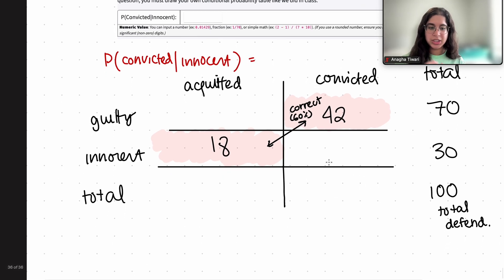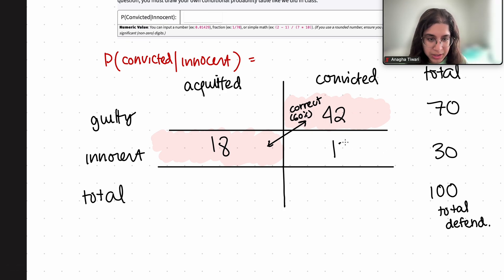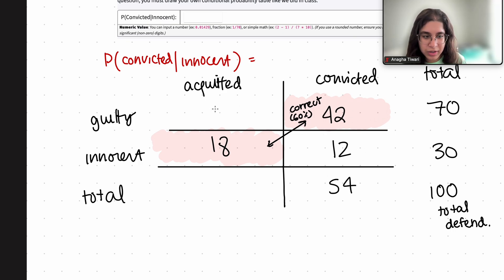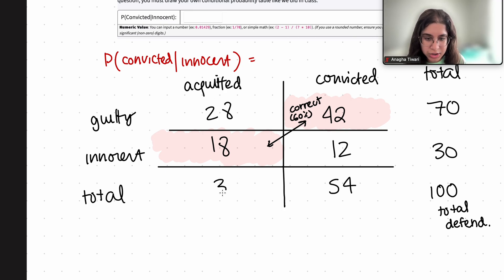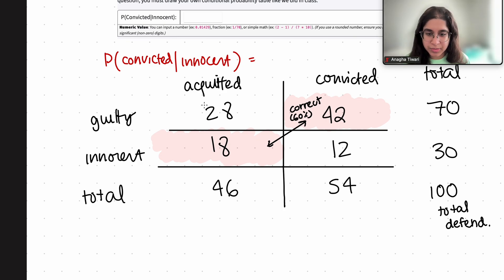Now it's just filling in the rest of the table. Out of 30 innocent, 18 were acquitted, so that leaves 12 convicted. For the guilty column, the acquitted cell will be 28 (70 minus 42), giving a total of 54 acquitted overall. Then finally the total convicted is 46. You just want to make sure all these values align, and that should be good.